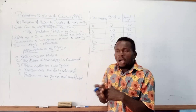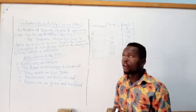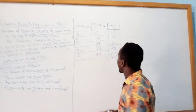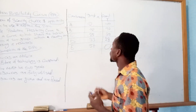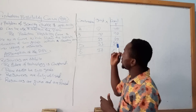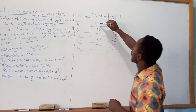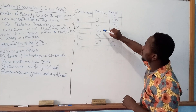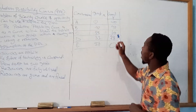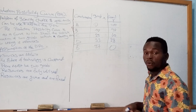The production possibility curve can be illustrated in a table and also in a curve. Looking at the table, we have a possible combination where a country can produce either good X or good Y. The combinations are labeled A, B, C, D, E. For good X the country can produce: 0, 10, 25, 33, and 37 units. And for good Y, the country can produce: 100, 90, 60, 28, and 0 units.